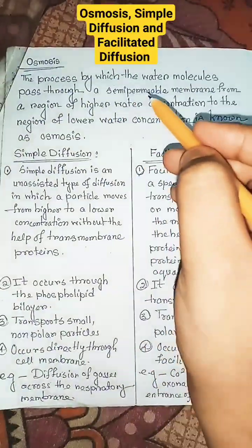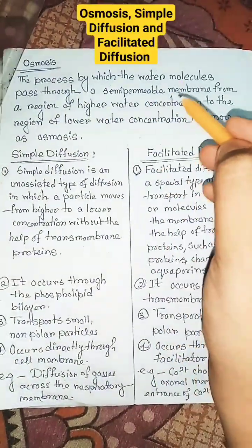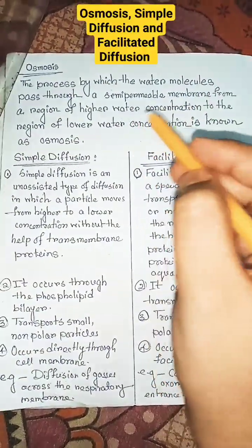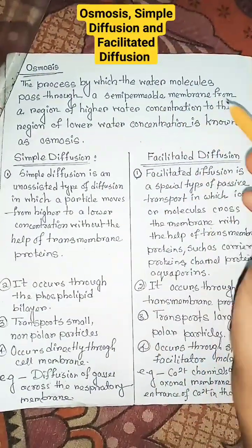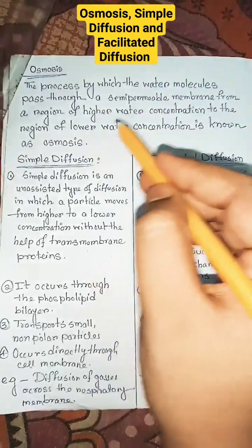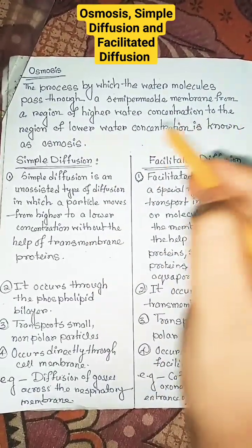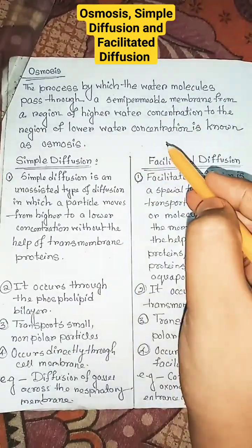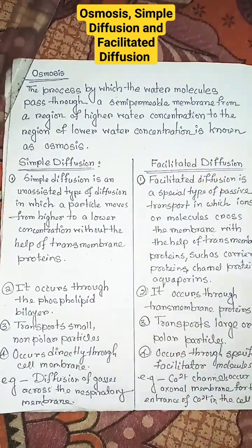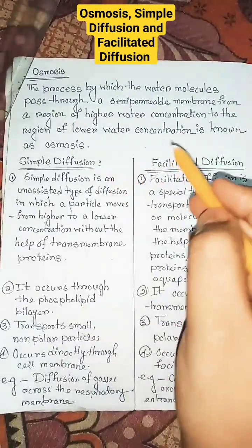Osmosis is the process by which water molecules pass through a semi-permeable membrane from a region of higher water concentration to a region of lower water concentration.